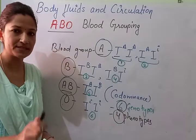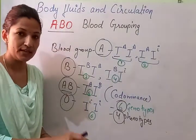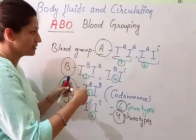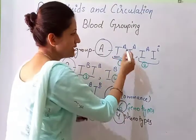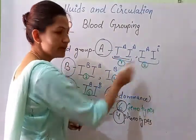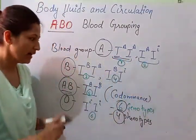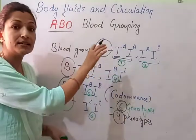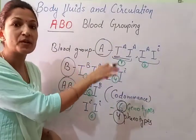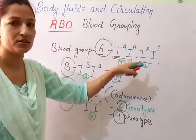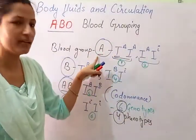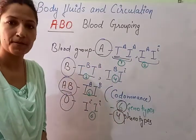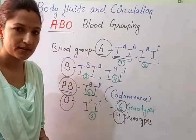Genotype is the genetic constitution, that genetic makeup — for example, I-A I-A is a genotype. And phenotype is what we get as an expression of that particular gene — so we get blood group A, and this is the phenotype.